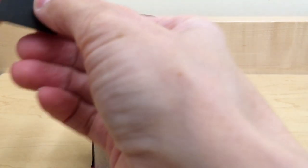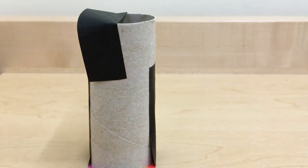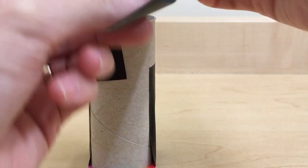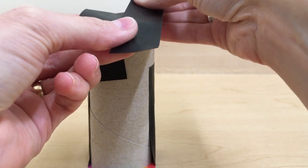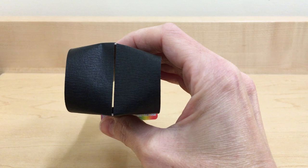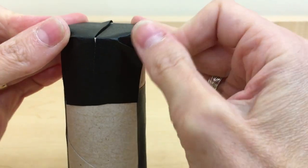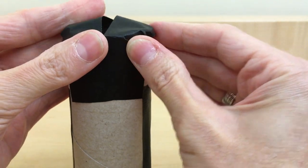The slit should be centered on the end of the tube and as narrow as possible. Be sure to seal the edges to prevent stray light from entering the tube.